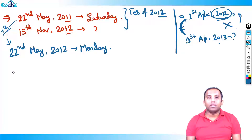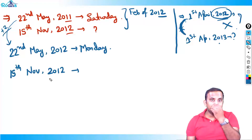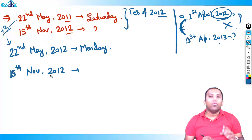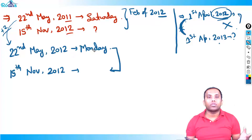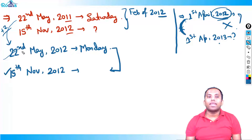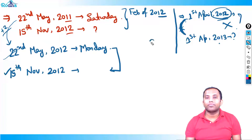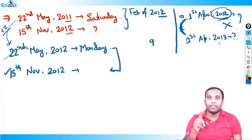Now the second concept: from 22nd May to 15th November. I have to be specific — which day to include and which to exclude. Since the starting date 22nd May is in the middle of the month, I'll exclude 22nd May. So from 22nd May to 31st May, excluding 22nd, that's nine days remaining in May.